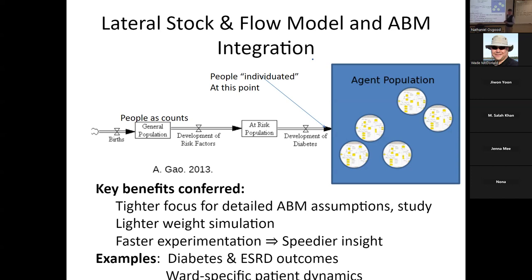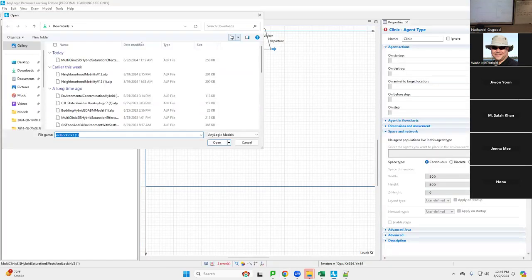We've pursued this strategy for quite a few models. This province was guided early in the pandemic by a model of exactly this sort created by a colleague. Capacity planning calculations, acute care demand, and plans for PPE — personal protective equipment — may have been informed by that as well. It was used for decision-making. We've also done it for diabetes, end-stage renal disease, and a few other models at a research level. It's a reliable pattern, quite easy to accomplish.